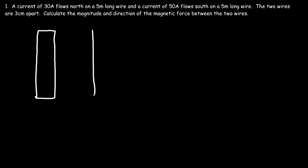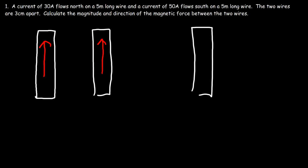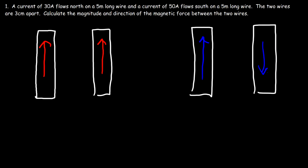Let's go over some basic concepts. What is the direction of the magnetic force if both currents are flowing parallel to each other — in the same direction? And what's the direction of the magnetic force if the currents are anti-parallel — say, one current goes north and the other goes south? If the currents are traveling in the same direction, the magnetic force is a force of attraction. If they're traveling in opposite directions, the wires will be repelled by each other.